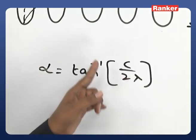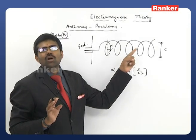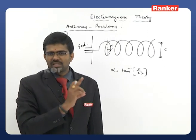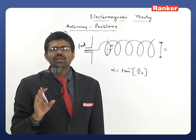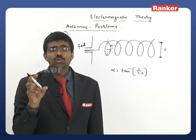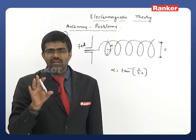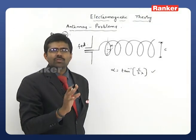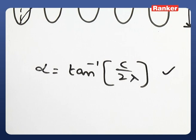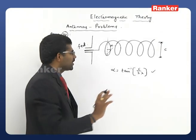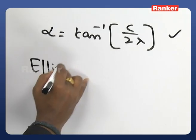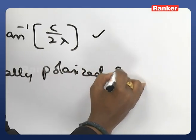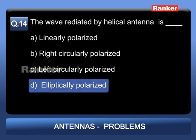Since no data is given about the pitch angle in this problem, in general the helical antenna produces elliptically polarized radiation. Option D — elliptically polarized — is the correct answer.